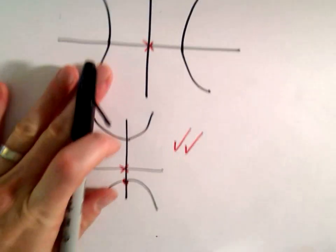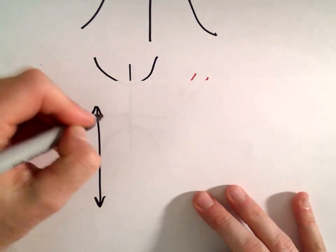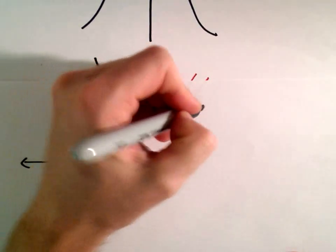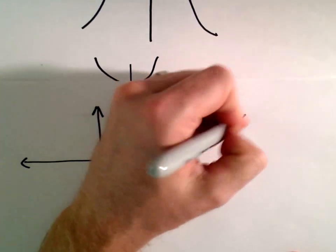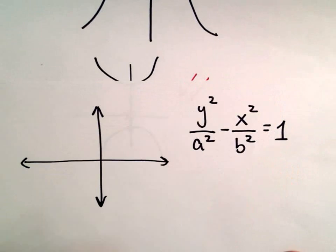And that's useful because that already tells me the form of the equation that we're going to use. So I know that this is going to be of the form y squared over a squared minus x squared over b squared equals 1.